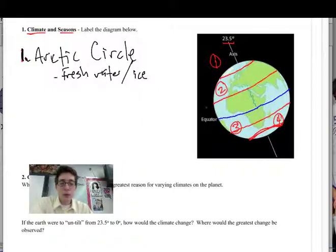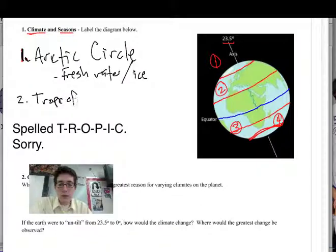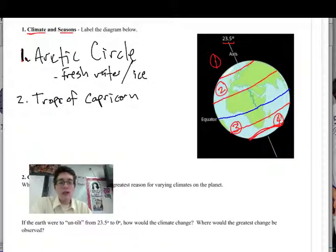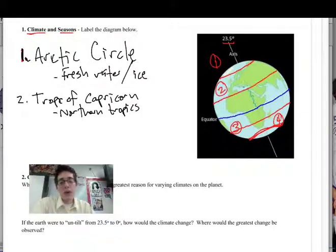As we move down, number two, this is called the Tropic of Capricorn. And this is the start of the tropic region. So this is the northern tropics. This cuts, it's not on the map, but it cuts kind of across the middle of North America. So Florida is part of the tropics and everything south of that, down through Mexico and into South America.